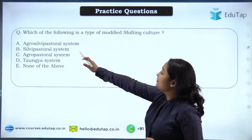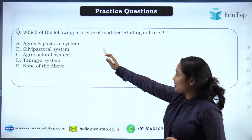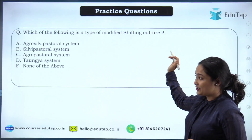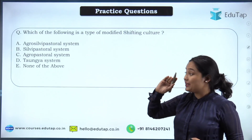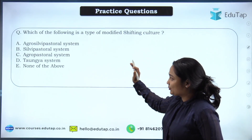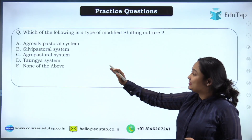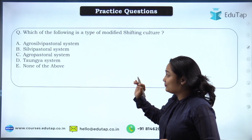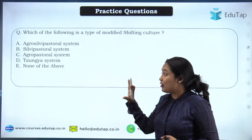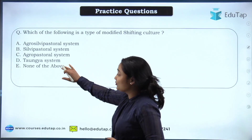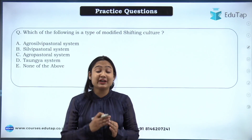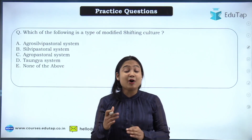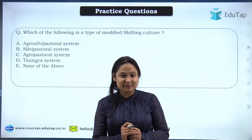First, let's discuss the homework question. The question was: which of the following is a type of modified shifting culture? The options were: agro-silvi-pastoral system, silvi-pastoral system, agro-pastoral system, tungya system, or none of the above.